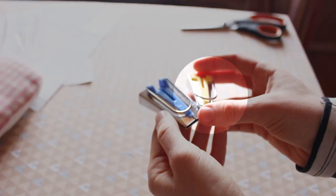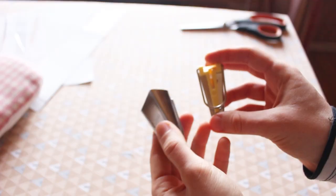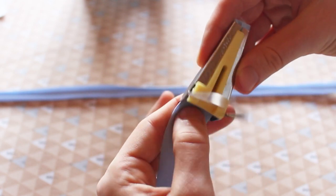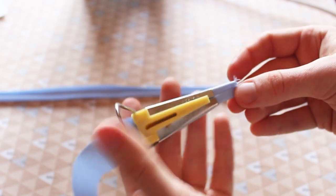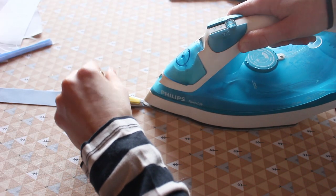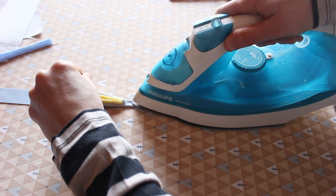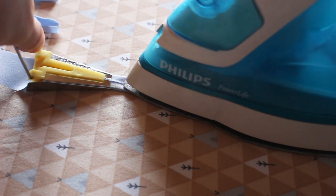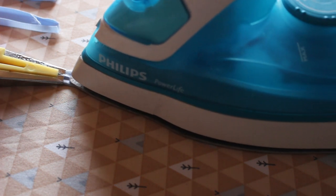Then I used bias tape makers to make my bias tapes. Although none of them cut on bias, so I guess they are just tapes. I started with the 12mm bias tape maker. I simply fed one end of the strip into the wide end of the tape maker, then slowly slid it along, moving my iron along with it.